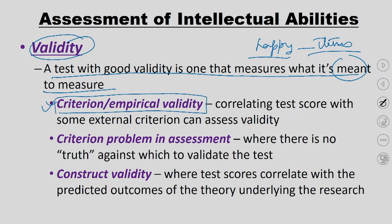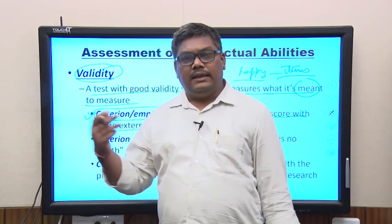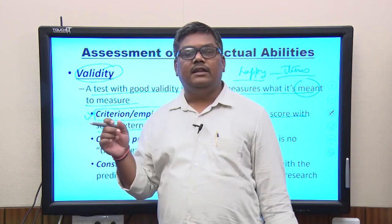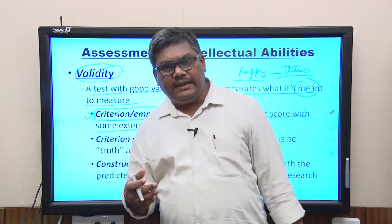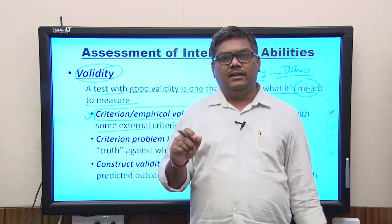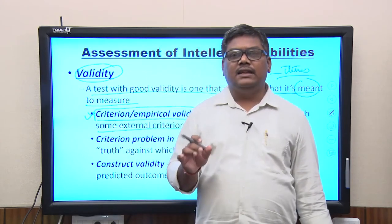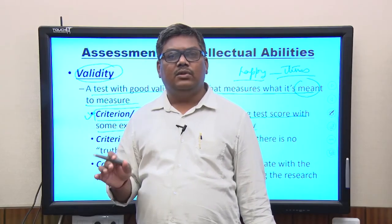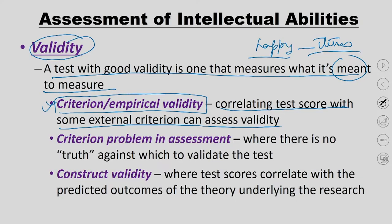There are three types of validity. One is called criterion or empirical validity: correlating test scores with some external criteria can assess validity. Let us say there is a test of happiness already existing in the market and I develop a new test. If my test gives nearly equal scores to the existing test and these scores correlate highly, then we say the new test has criteria or empirical validity.